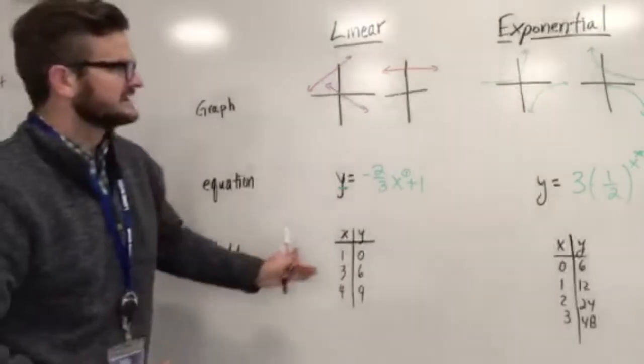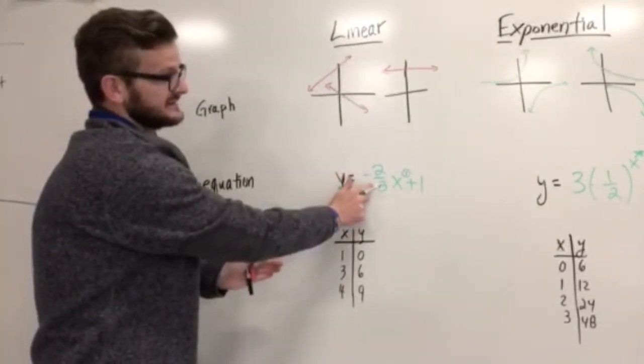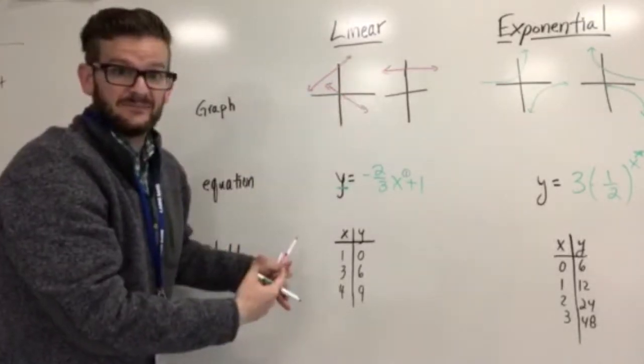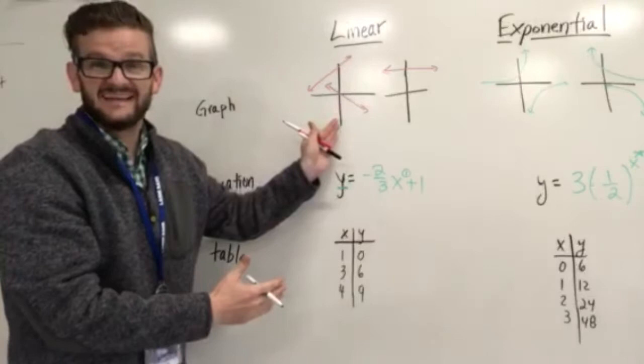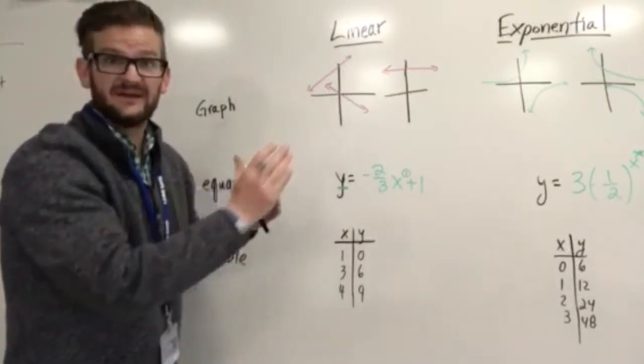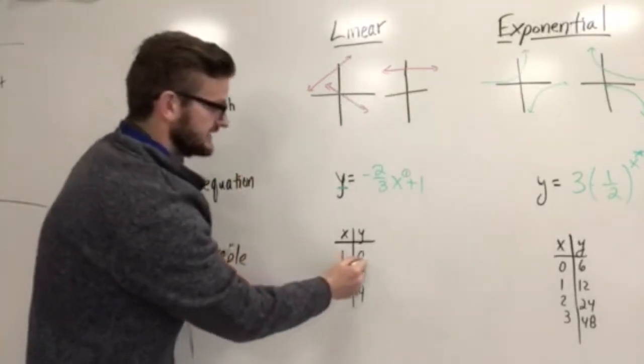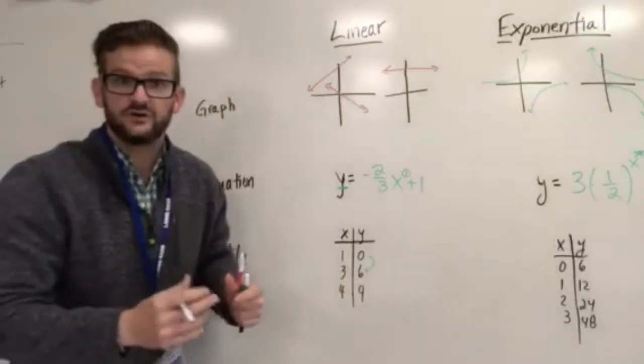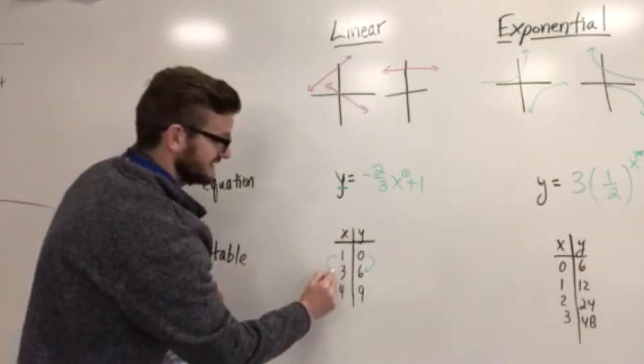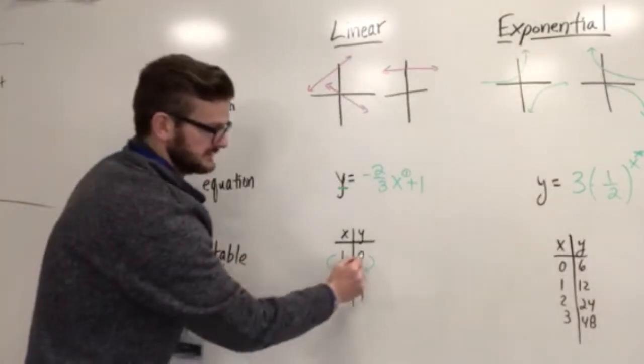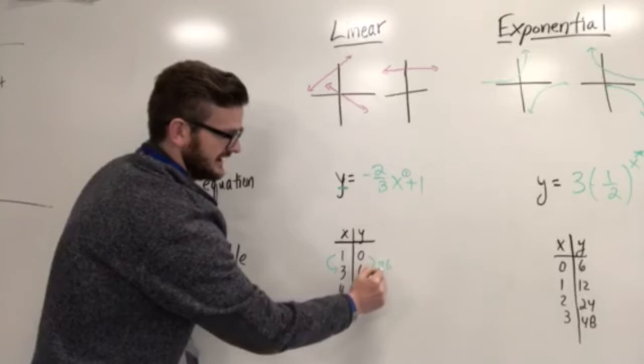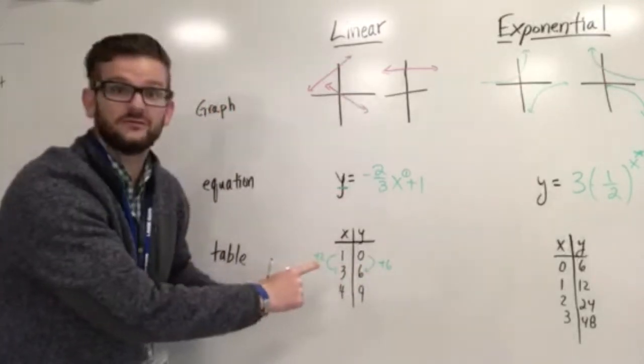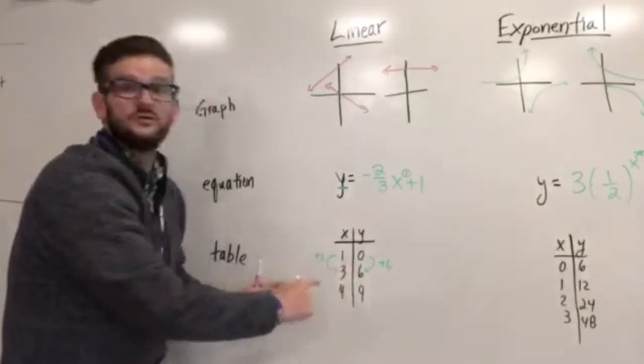Now looking at the tables, linear, we refer to the constant rate of change here being the slope, constant rate of change being there on the graph. We also see it on the table. If we plotted these points, it's going to make a line. They're all going to be in the same direction here. The other thing with the table is we're looking for a constant rate of change. So if we chose any two points, then we would find the rate of change between them. So 0 to 6 is adding 6. 1 to 3 is adding 2. The rate of change between those two points is 6 over 2, which is 3.